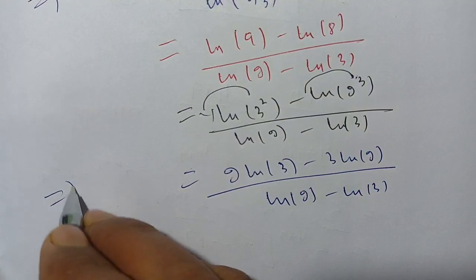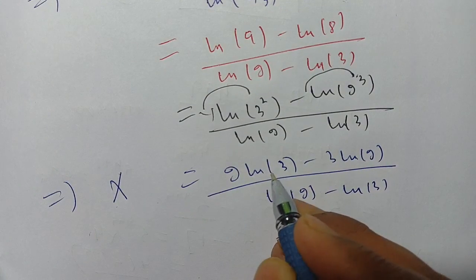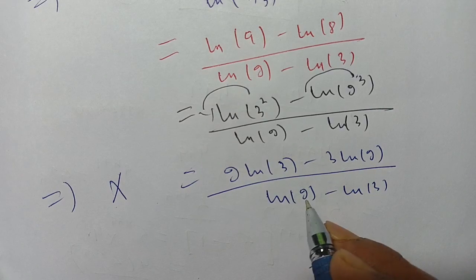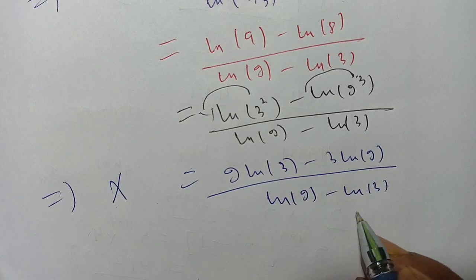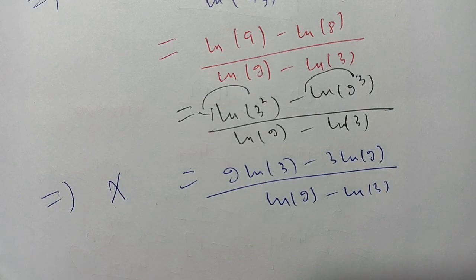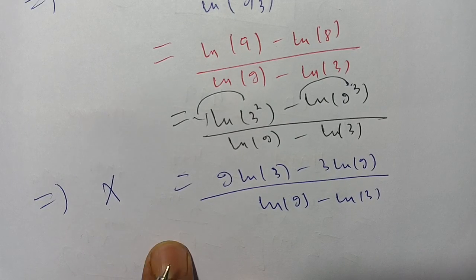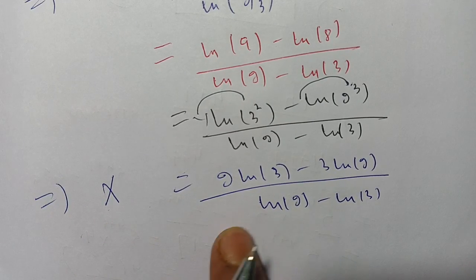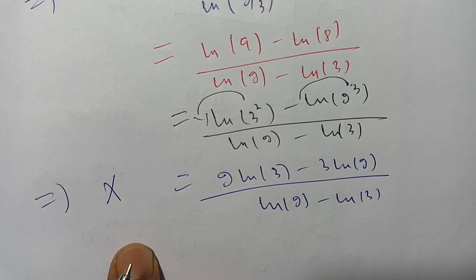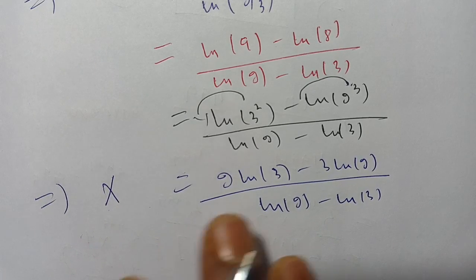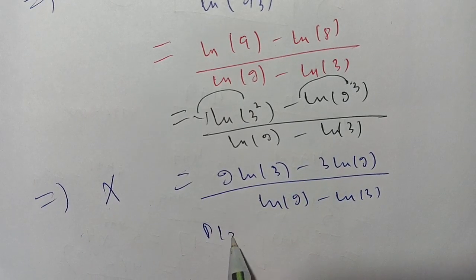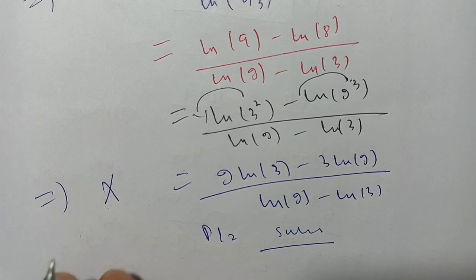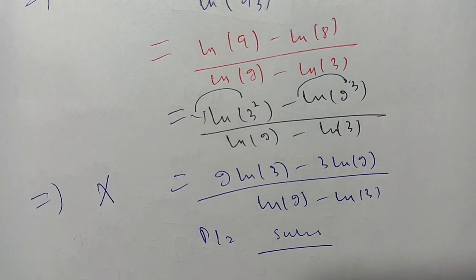Thus, x is equal to (2 log 3 minus 3 log 2) divided by (log 2 minus log 3), which is the required value. This is the simplest form. If you are new here, please subscribe to our channel for more informative videos. See you in the next video. Bye!